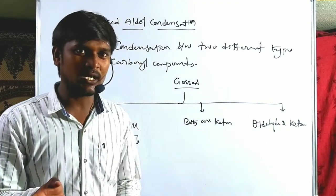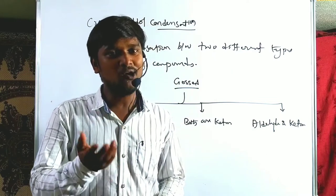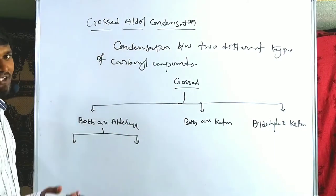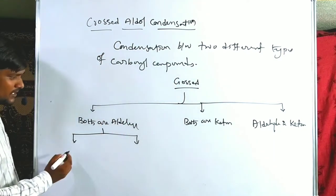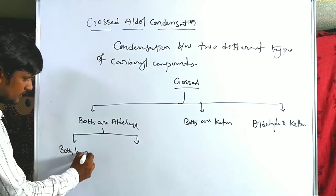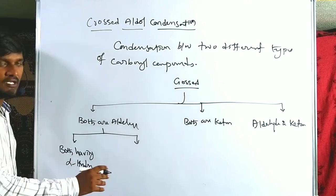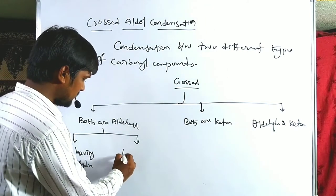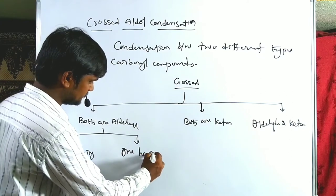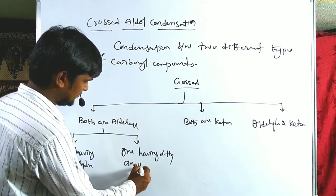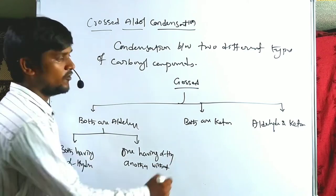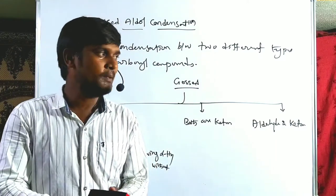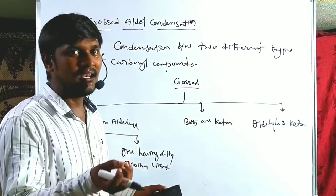Aldol reactions require a minimum of one alpha hydrogen. So we classify carbonyl compounds into two types: with alpha hydrogen and without alpha hydrogen. When both are aldehydes with alpha hydrogen, it may give more than one product. When both are ketones, ketones are weaker electrophiles — they are poor electrophile acceptors.